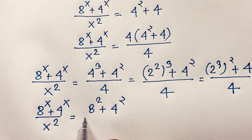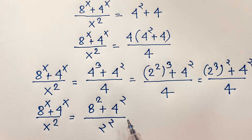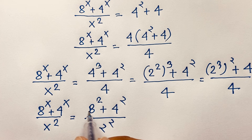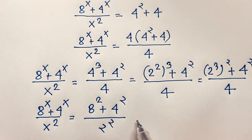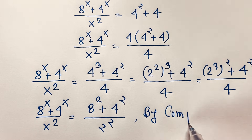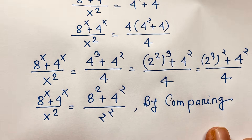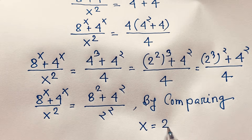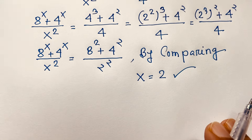Now at this moment I compare both sides. This side has 8, 4, and 2; the other side also has 8, 4, and 2. By comparing, I can easily see that x is equal to 2. This is our final answer.